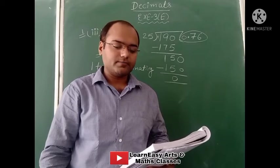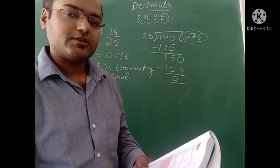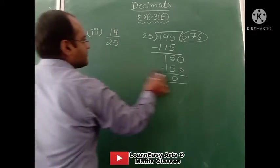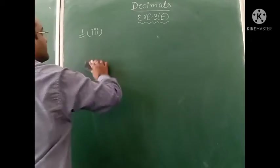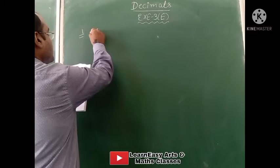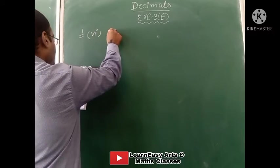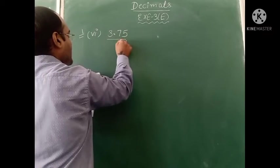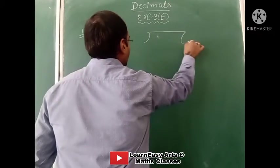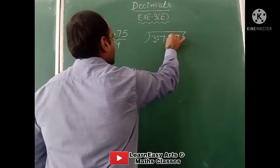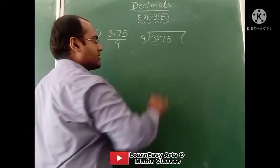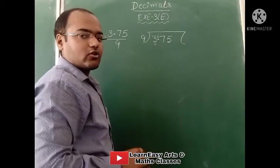Now see another part — Part number 6. The 6th part is 3.75 divided by 9. We have to divide 3.75 with a table of 9. Here before the decimal, 3 is written. In a table of 9, 3 is not coming.